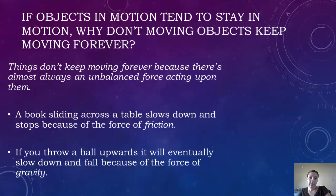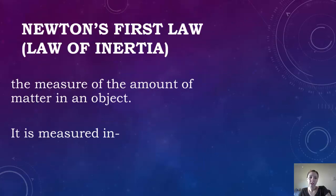For the law of inertia, we have mass. Mass is the measure of the amount of matter in an object, and it's measured in kilograms. So for the law of inertia — what exactly is inertia? Inertia can be described as a property of an object.